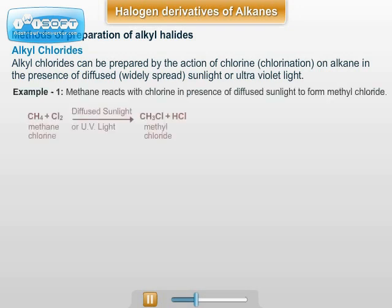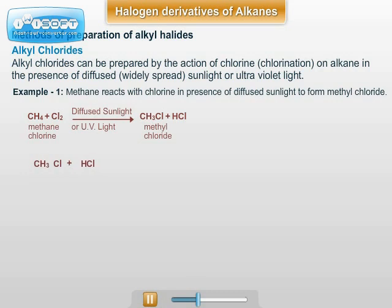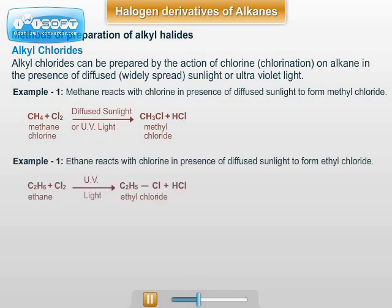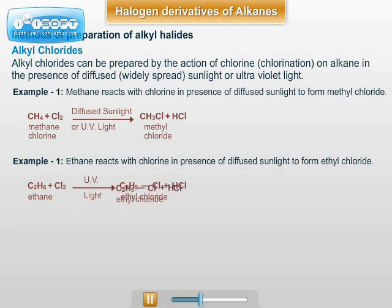For example, methane reacts with chlorine in the presence of diffused sunlight to form methyl chloride. Example number two: ethane reacts with chlorine in the presence of diffused sunlight to form ethyl chloride.